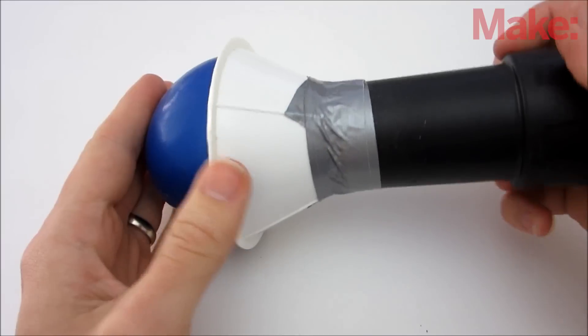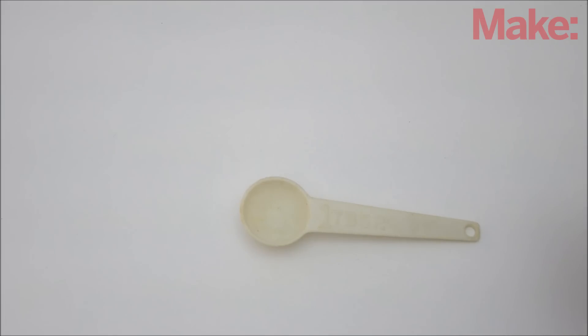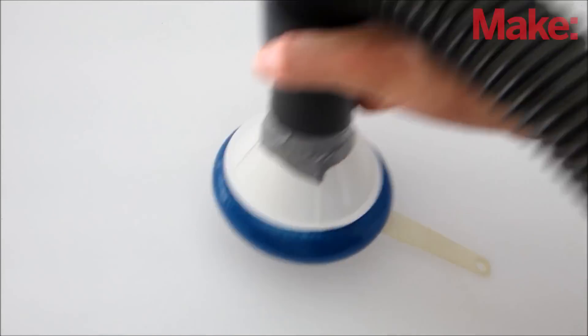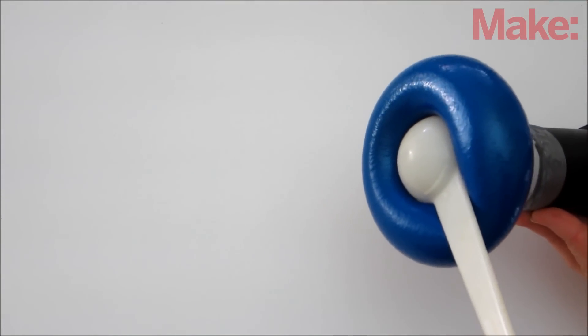Then just hook up the hose to an air pump. To pick up an object, first partially inflate the balloon. Then press the balloon onto the object. Now when you suck the air out of the balloon, it will grip the object from all sides.